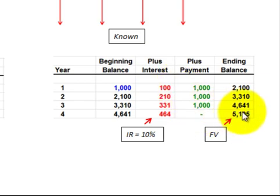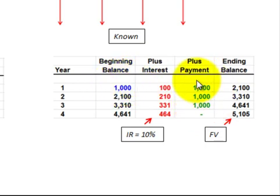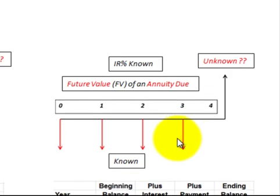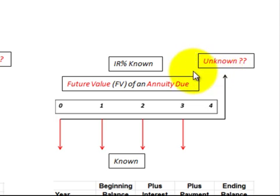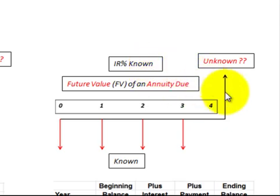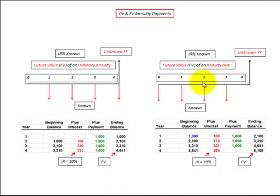That future value included the interest received or paid on those annuity payments, plus the beginning balance and three payments. Looking at the cash flow diagram: annuity due payments are at the beginning of each period and discounted forward to determine the future value. We need to know the interest rate, the payment values, and the number of payments. This is an overview of future value for ordinary annuities with end-of-period payments and annuity dues with beginning-of-period payments.